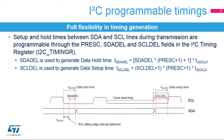The I2C setup and hold times can be configured by software through the I2C timing register. The SDA-DEL and SCL-DEL counters are used during transmission in order to guarantee the minimum data hold and data setup times. The I2C peripheral waits for the programmed data hold time after detecting a falling edge on the clock line before sending the data. After the data is sent, the clock line is stretched low during the programmed data setup time. The total data hold time is greater than the programmed SDA-DEL counter.